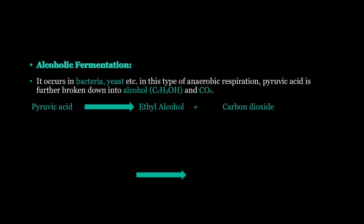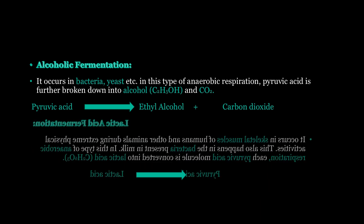The second type is lactic acid fermentation. It occurs in the skeletal muscles of humans and other animals during extreme physical activities, and also in bacteria present in milk. In this type of anaerobic respiration, each pyruvic acid molecule — 3 carbons — is converted into lactic acid. There are two pyruvic acid molecules from the first phase, and each is converted into lactic acid.